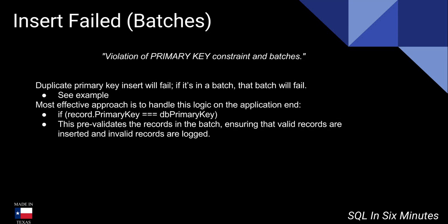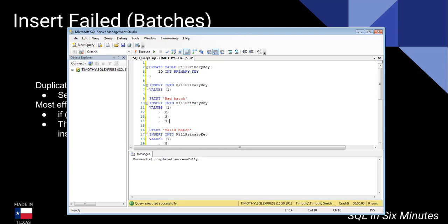Let's look at an example of a question that I was asked the other day by an application developer. This relates to when we get an insert failure due to a violation of the primary key. Imagine that we have a batch of 10,000 records, and one of those records is a duplicate primary key. What's going to happen is the entire batch is going to fail. Let's look at this as a simple example.